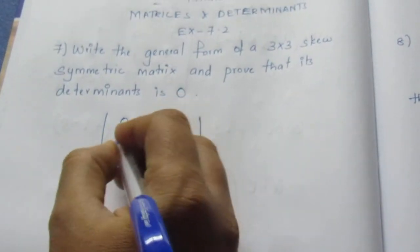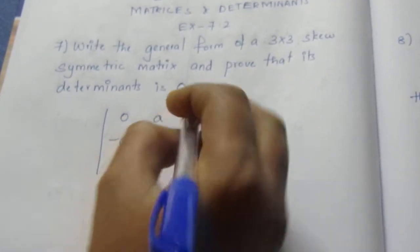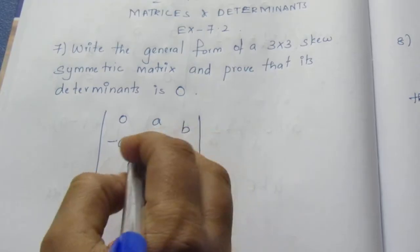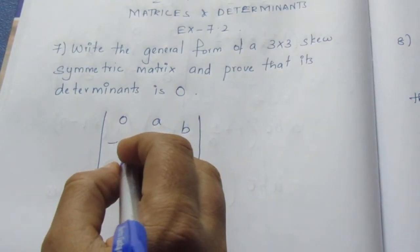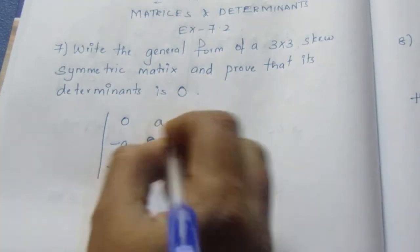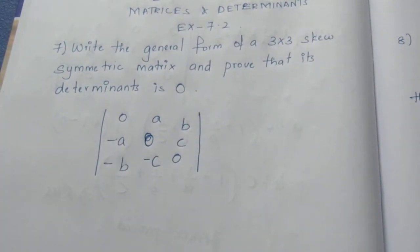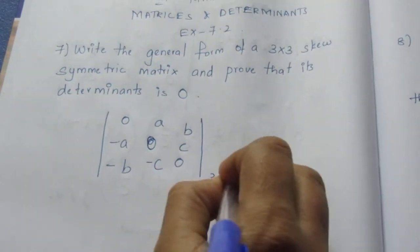Skew symmetric diagonal is 0. In this nth element you can write it as opposite. If you write it as a, you can write it as minus a. If you write it as b, you can write it as minus b. If you write it as c, you can write it as minus c. So this is a skew symmetric matrix.